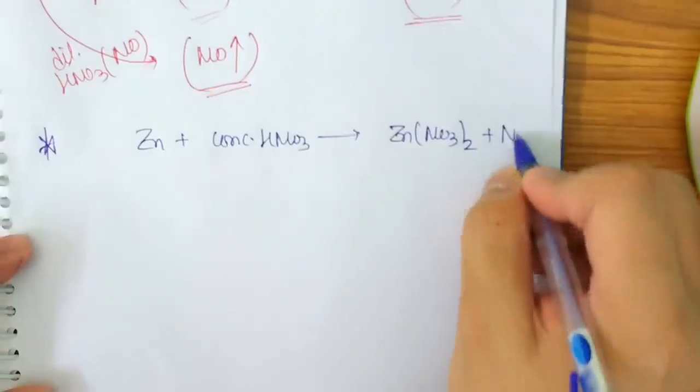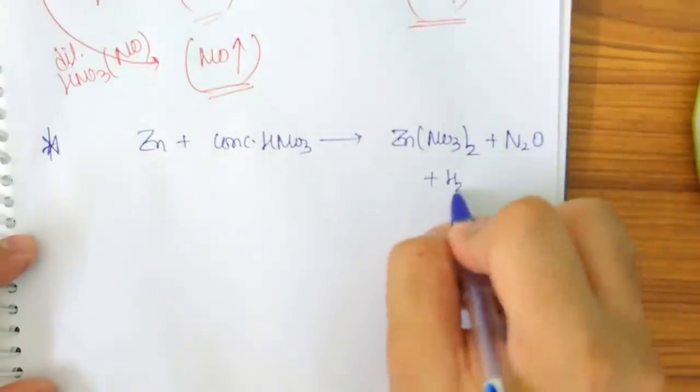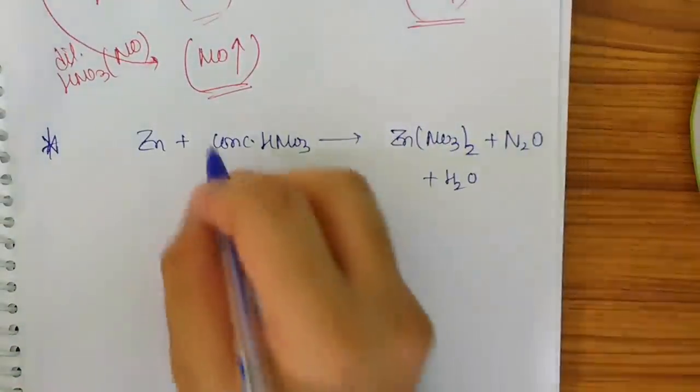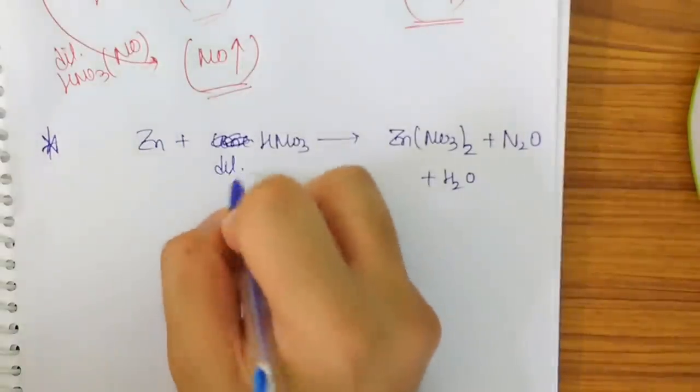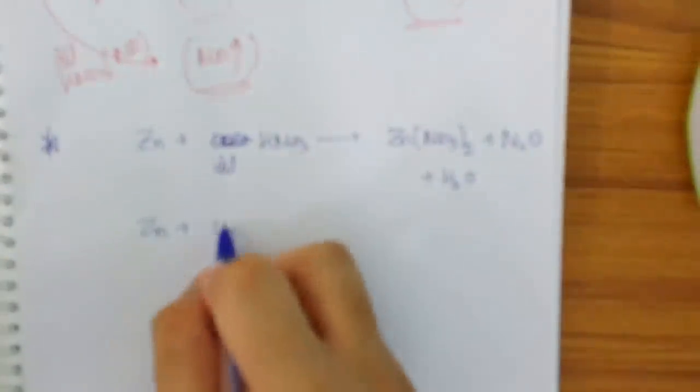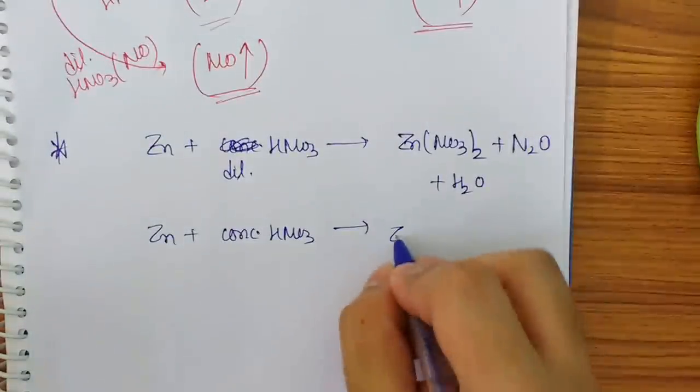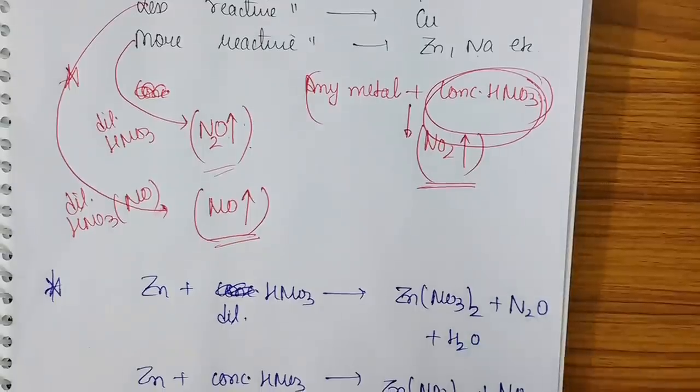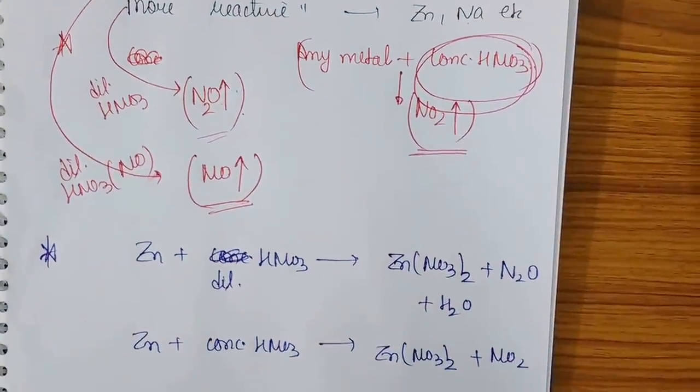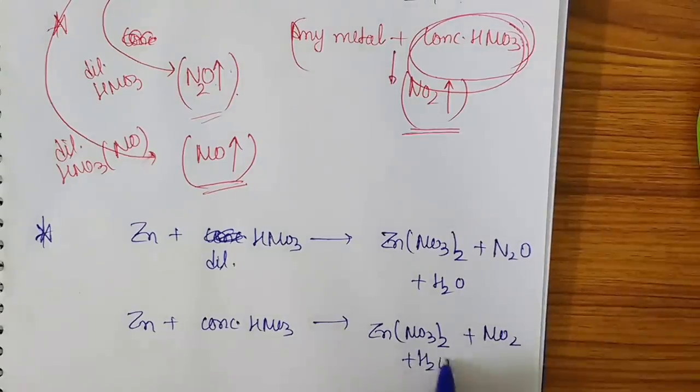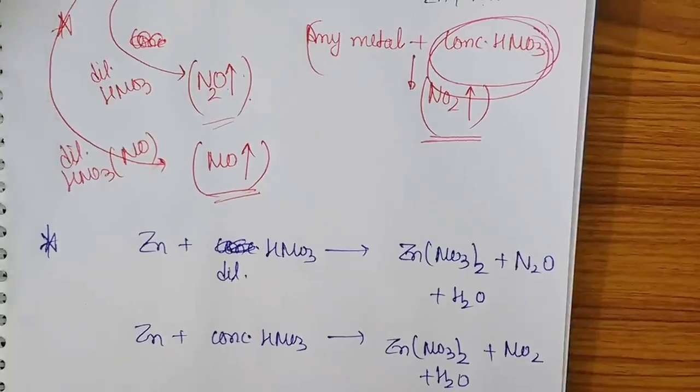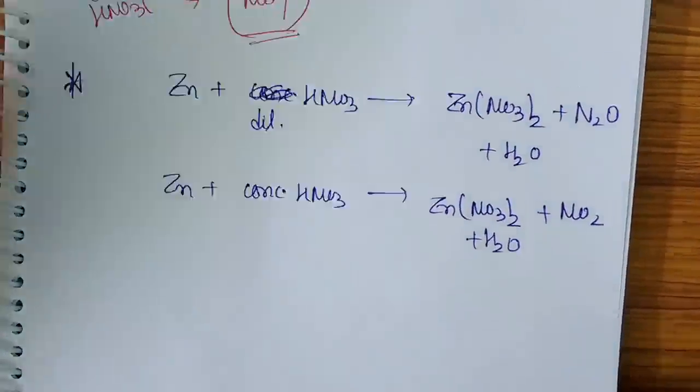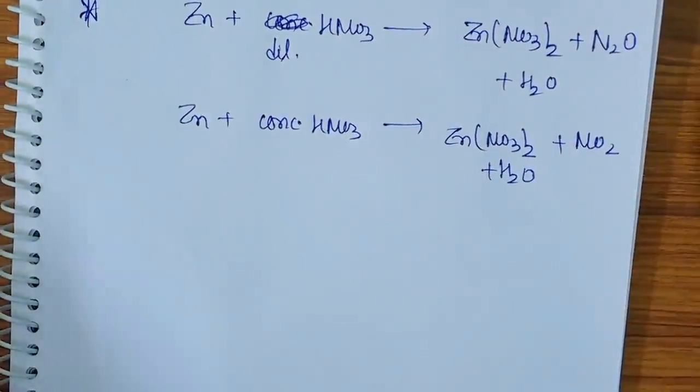So actually I will take this to be diluted HNO3. Now when I take concentrated HNO3, what happens? First step is to release Zn(NO3)2. Second step will be with concentrated HNO3, always I will get NO2 to be one of the products. Now what will be the third step? To generate H2O. So this is the basic thing that we have to learn. Now I will tell you how to balance the equations by the mathematical method.